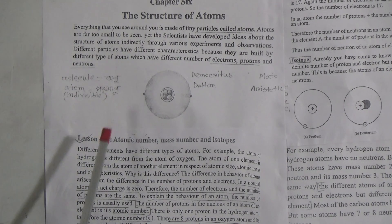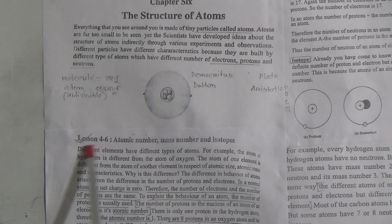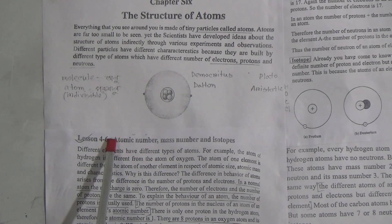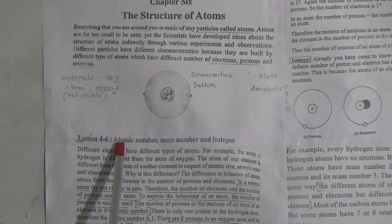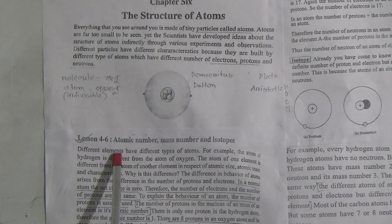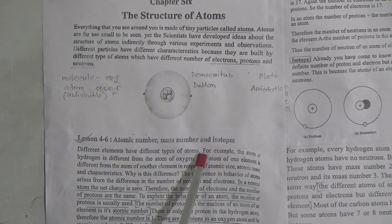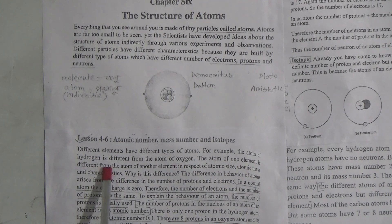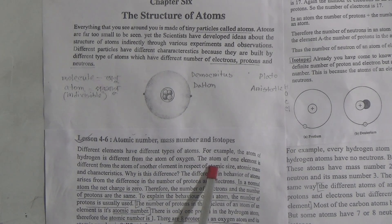Now we will discuss lessons 4 to 6, which are included in your short syllabus given by the government. The topics of the lessons are atomic number, mass number, and isotope. Different elements have different types of atoms. For example, the atom of hydrogen is different from the atom of oxygen. The atom of one element is different from the atom of another element in respect of atomic size, atomic mass, and other properties.